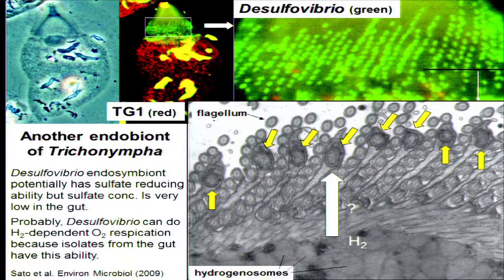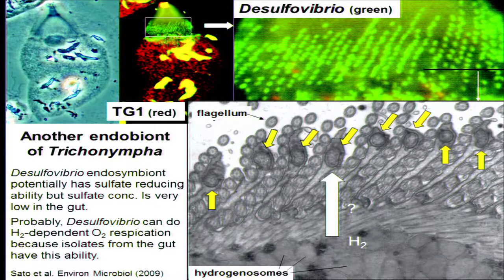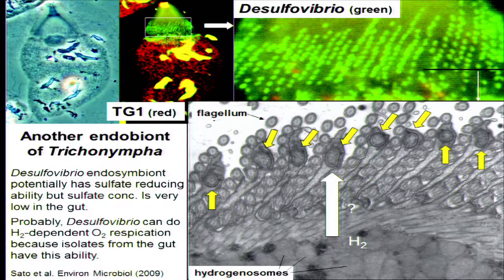For the TG1 endosymbiont whose genome sequence we determined, a second symbiont is localized in the apical part of the cells. We identified this endosymbiont as a Desulfovibrio species. This is an EM picture of a section of this part. This part is a flagellated region of the host protist, and hydrogenosomes are located in large amounts in the cytoplasm. The Desulfovibrio endosymbiont is located between the flagellated areas.